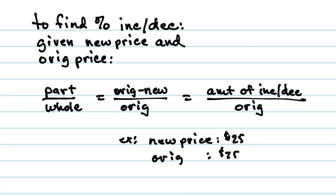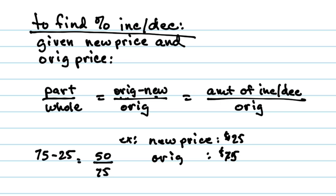For example, the new price is $25 on something that originally cost $75. I'm purposely choosing easy numbers. To find out the percent of decrease — the new price is much lower than the original — I take the original minus the new: $75 minus $25 equals $50, and then divide it by the original price of $75. So 50 divided by 75 gives us 0.67, which we then move the decimal two places to the right to create a percent, giving us 67%. So the amount we saved was 67%.